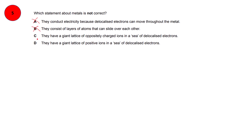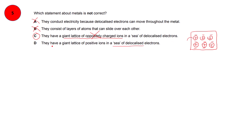Option C states they have a giant lattice of oppositely charged ions in a sea of delocalized electrons. In the structure of metals, there is a sea of negative electrons, but only positive ions are present inside — there are no oppositely charged ions. So option C is the incorrect statement and the correct response. Option D states a giant lattice of positive ions in a sea of delocalized electrons, which is true, so it cannot be the answer.